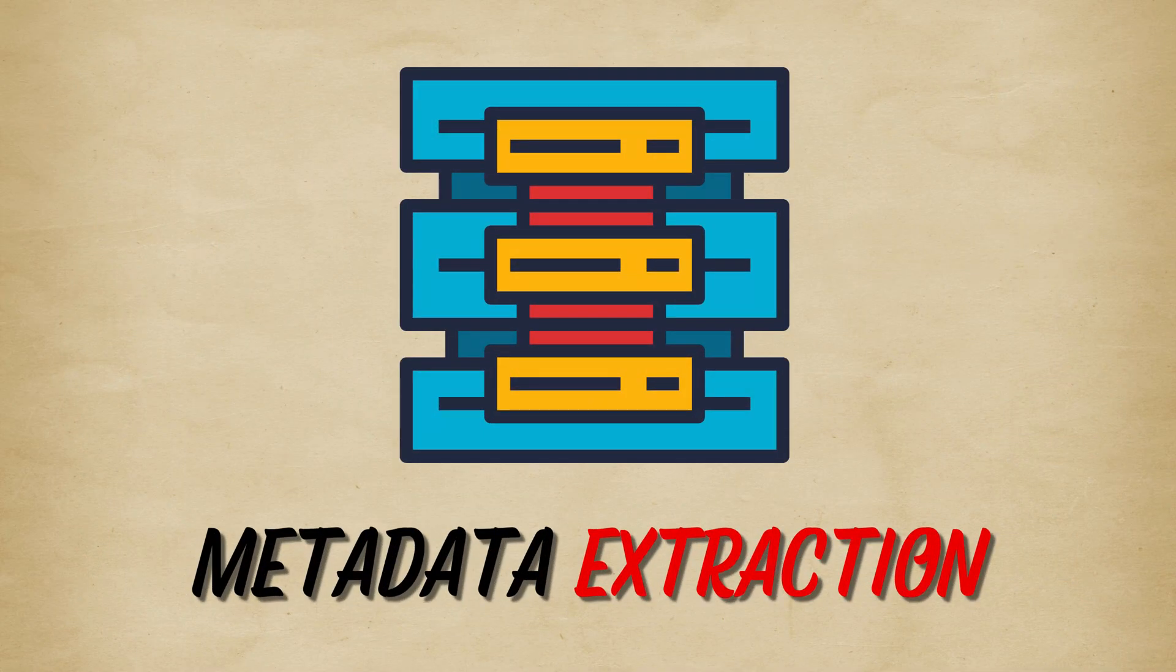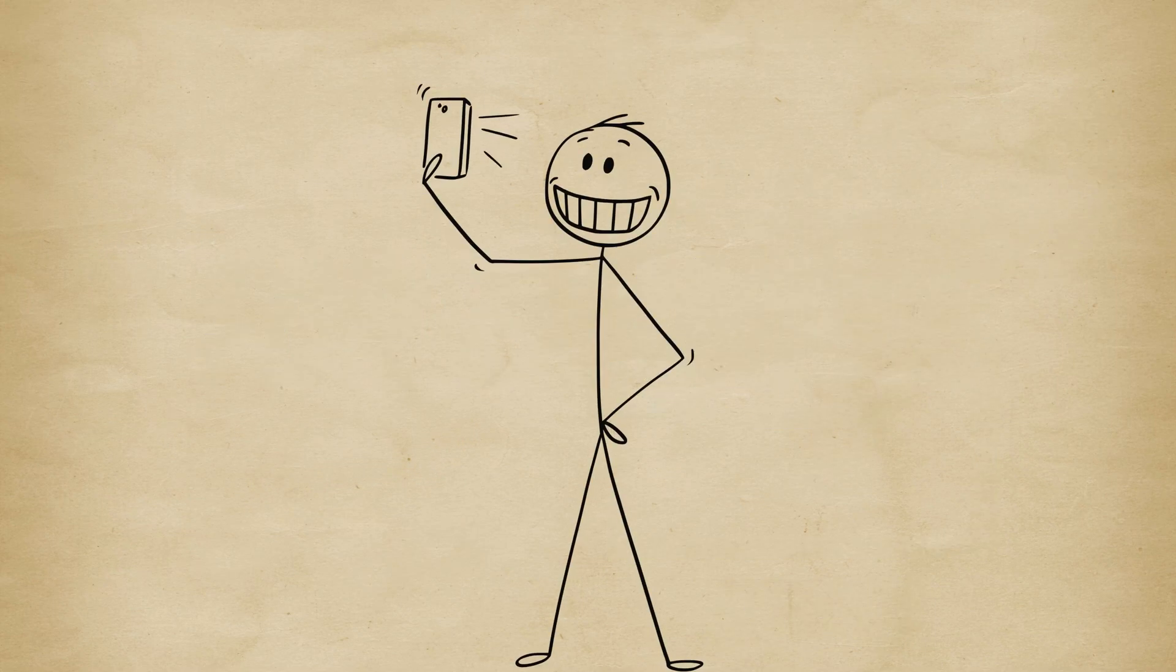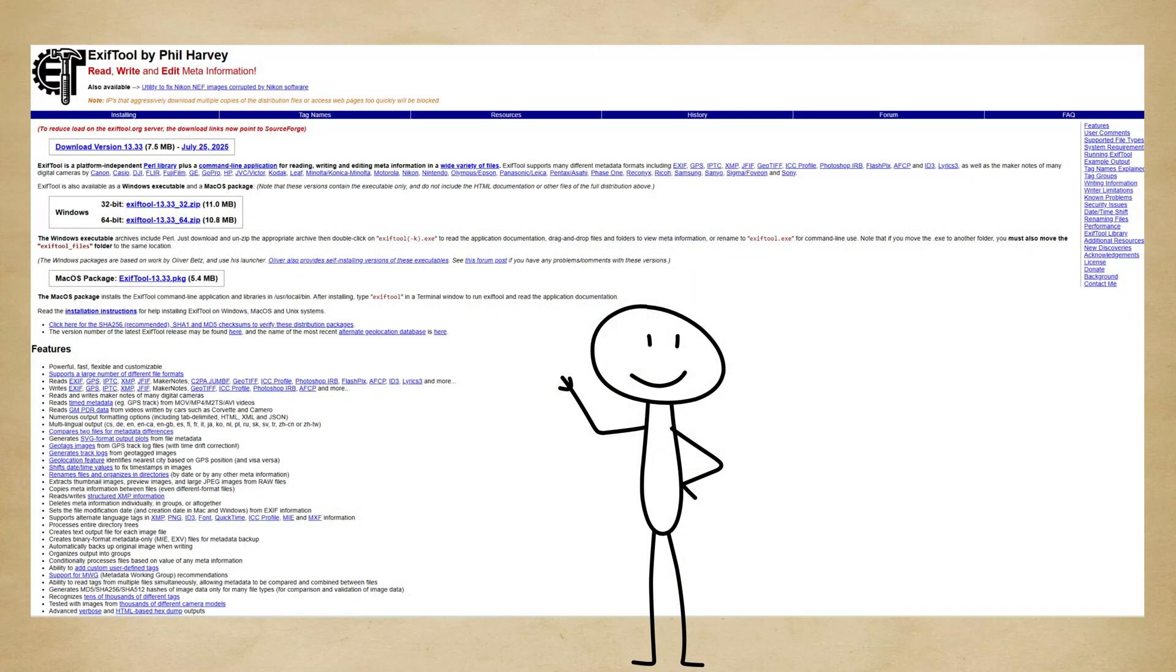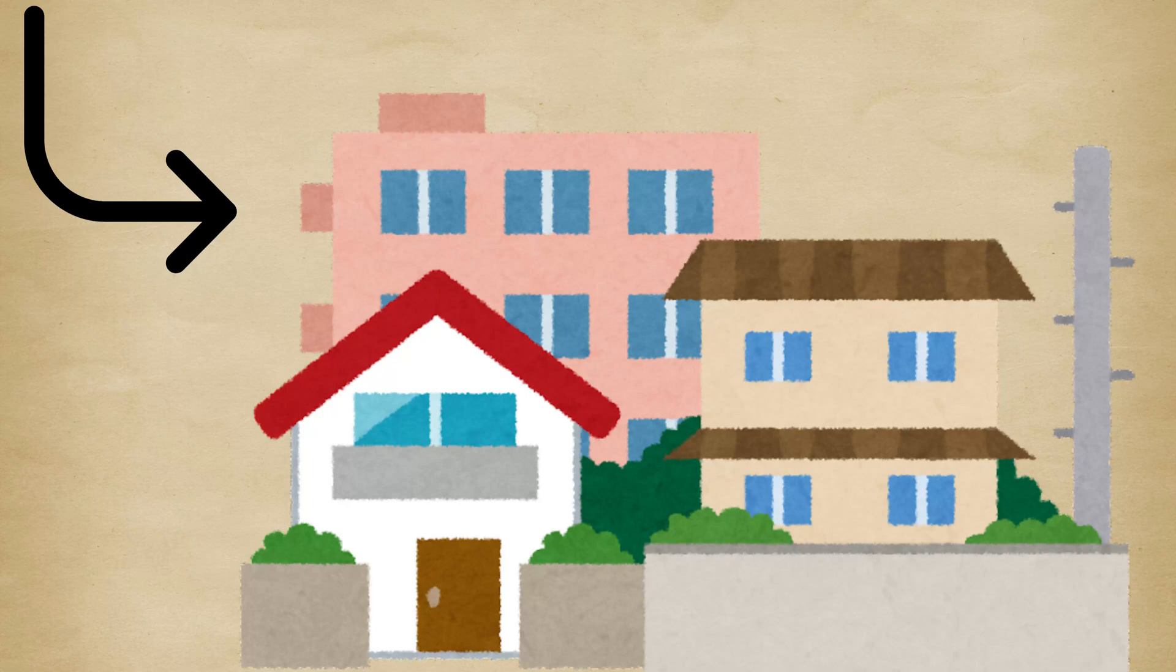Metadata is the hidden data inside files and photos. The stuff you don't see, but that tells a story. For example, a simple selfie might have GPS coordinates embedded in its EXIF data. Tools like EXIF tool can read that and pinpoint exactly where the photo was taken, sometimes down to the street corner.